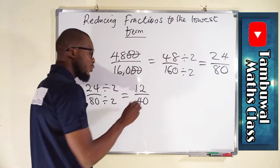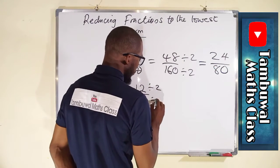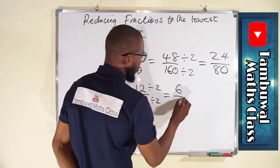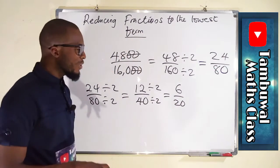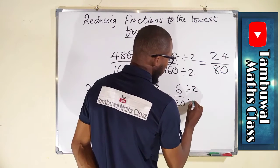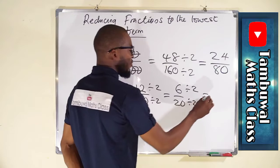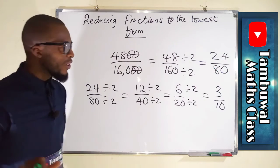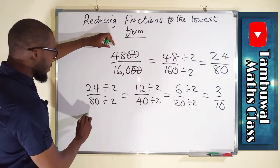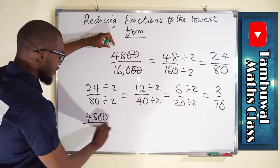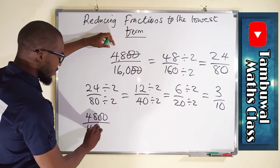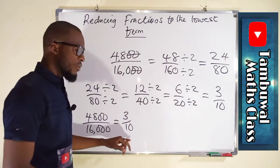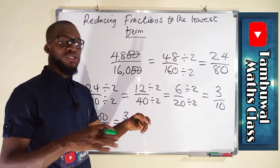12 and 40 are also even, so we divide by 2: 12 divided by 2 is 6, and 40 divided by 2 is 20. Still both even, so we divide by 2 once more: 6 divided by 2 is 3, and 20 divided by 2 is 10. Since 3 and 10 have no common factor, we stop. Therefore 4800 divided by 16000 is equivalent to 3 over 10 in its lowest term.